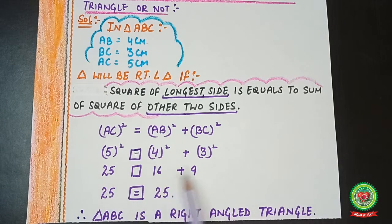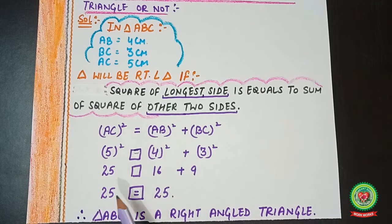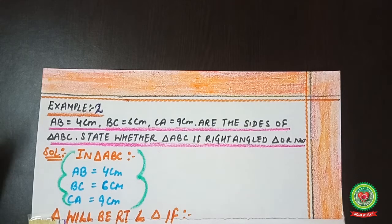25 equals 16 + 9, which is also 25. So the right hand side equals the left hand side. Therefore, triangle ABC is a right angled triangle. Now let's move to example number two.